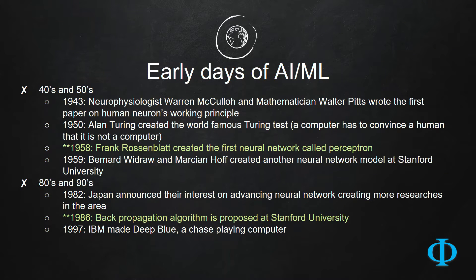But the actual machine learning, the scientific discoveries, started from 1943, when neurophysicist Warren McCulloch and mathematician Walter Pitts wrote their first paper on the mathematical working principle of human neurons.